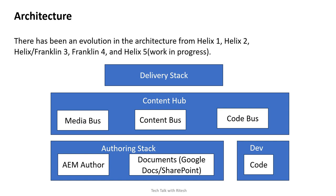So this is a rough idea of the overall architecture of the Franklin project, divided into three parts: the delivery stack, which is a combination of CDN and pipeline services; the Content Hub, which holds our assets, pages, and code pulled from GitHub; and the authoring stack, where content is configured either through AEM Author or document-based authoring using Google Docs or SharePoint. There are other ways too, like the Universal Editor. For the Franklin project, document-based authoring is the main concept to understand. Thank you for watching — we'll cover the architecture in more detail in the next videos.